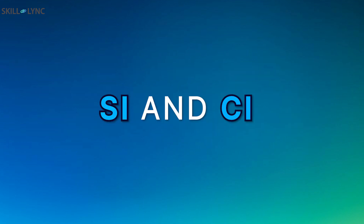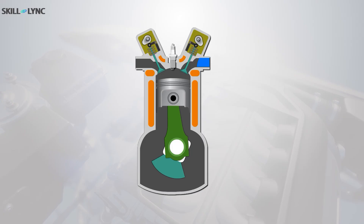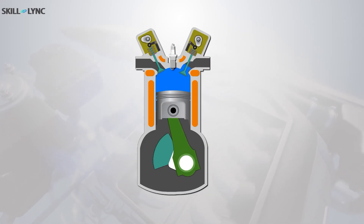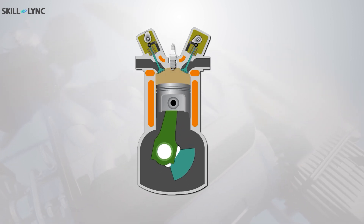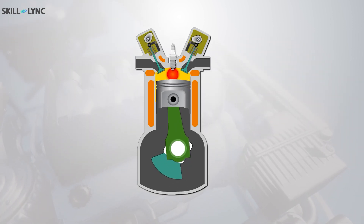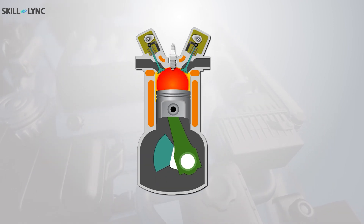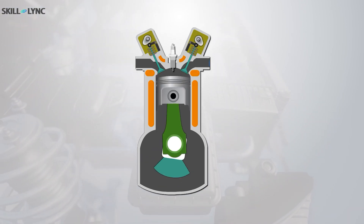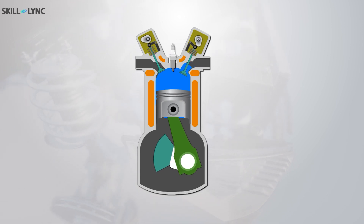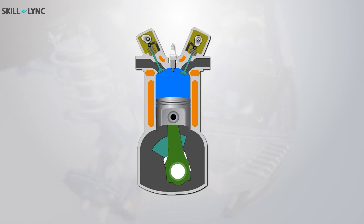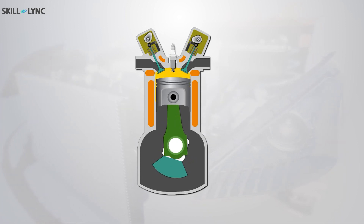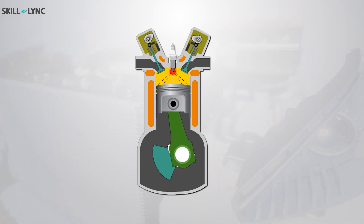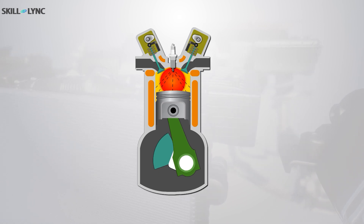We didn't mention the biggest difference between SI and CI engines, did we? Well, in spark ignition engines, a mixture of air and fuel is supplied to the engine cylinder during the suction stroke. This air fuel mixture is compressed to high pressure and then ignited with the help of a spark plug. On the other hand, in compression ignition engines, the air is supplied to the engine cylinder during the suction stroke. This air is then compressed to very high pressure during the compression stroke. A fuel injector is used to spray fuel on the compressed air which initiates the combustion process.